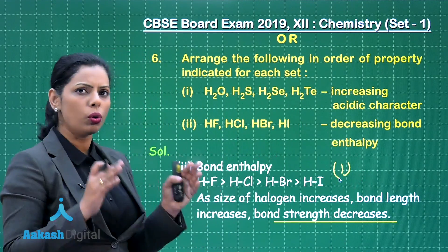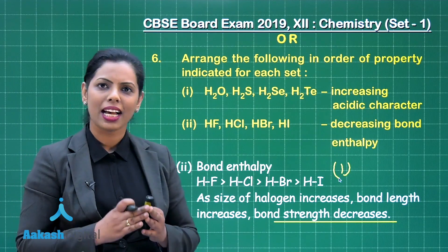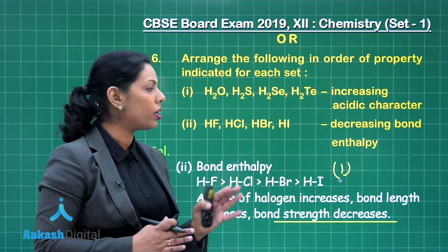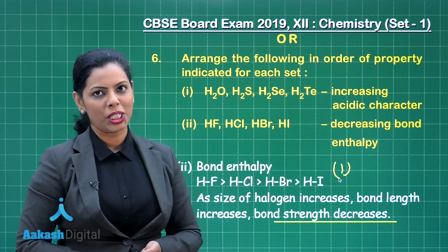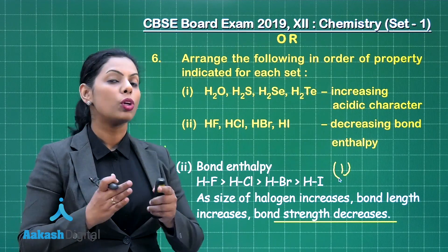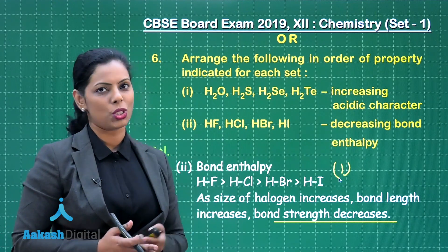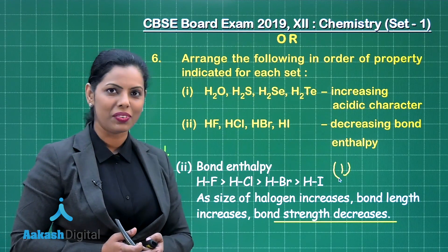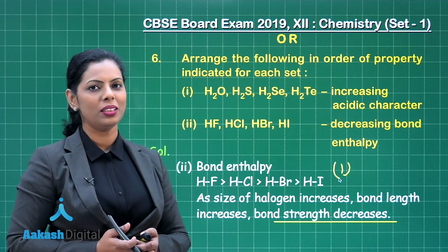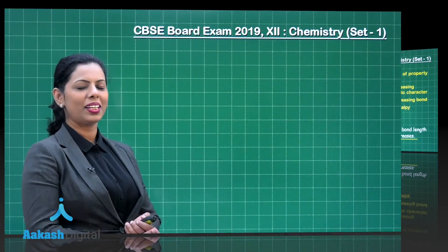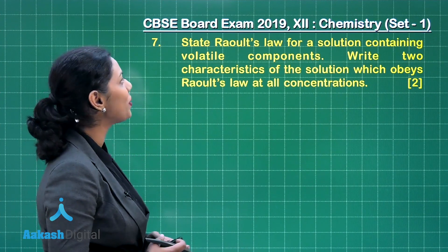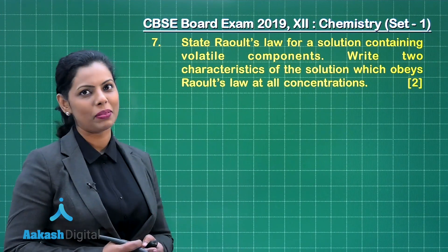In this question, you simply need to arrange the compounds in the particular order given. For this internal choice, you will obtain 2 marks. Now let us take the next 2-marker question, that is question number 7.